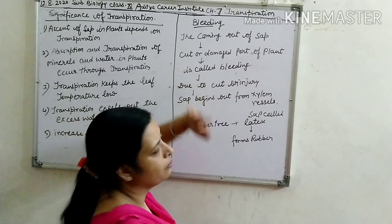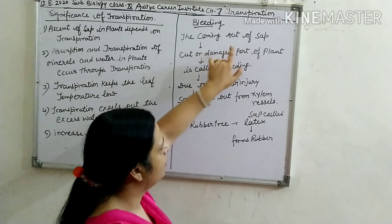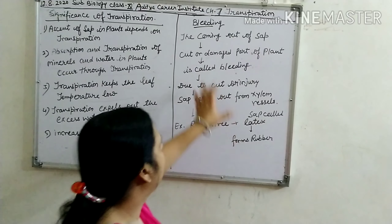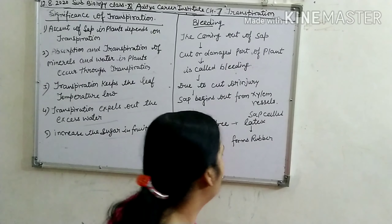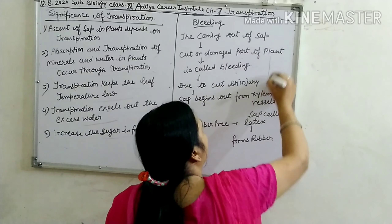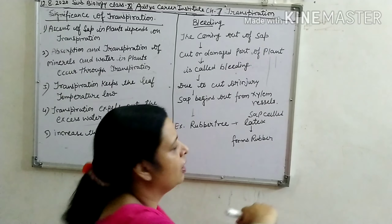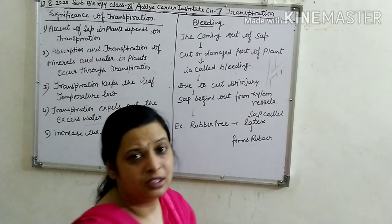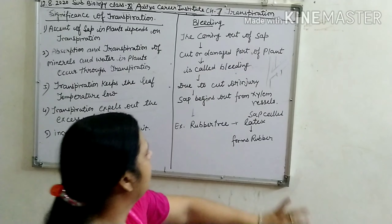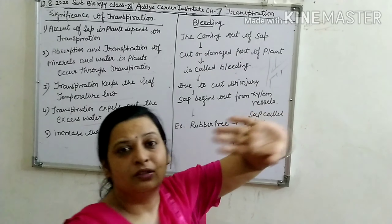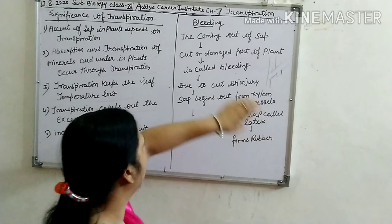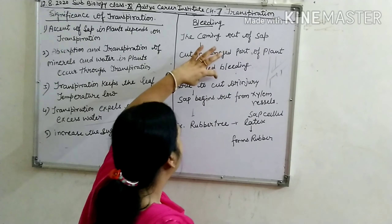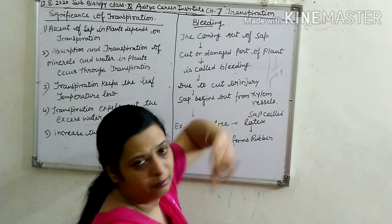Now we talk about the next topic: bleeding. The coming out of sap from a cut or damaged part of a plant is called bleeding. It means if a plant has a twig and that twig is cut or broken, then some sap is removed from outside of that part — this process is called bleeding.